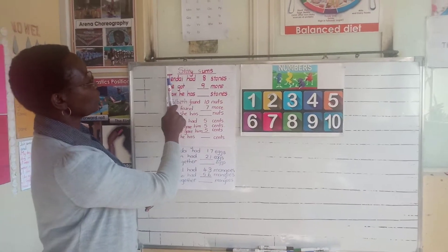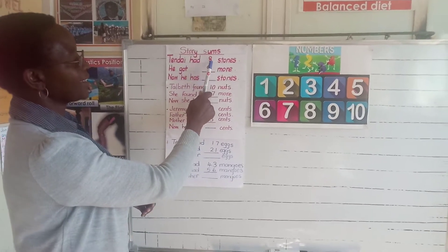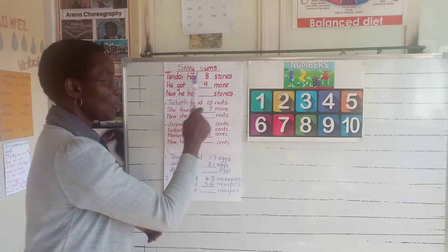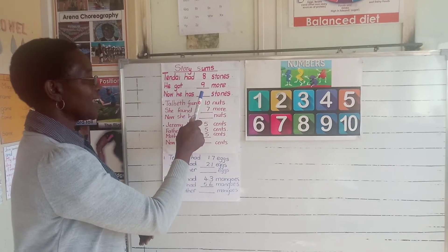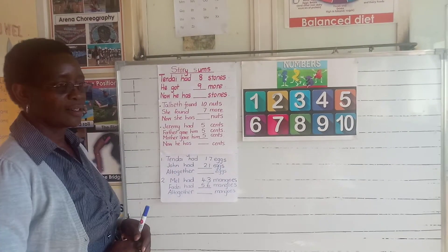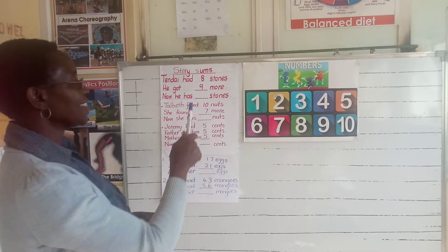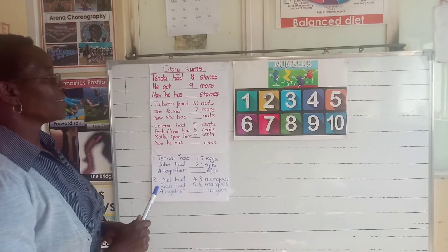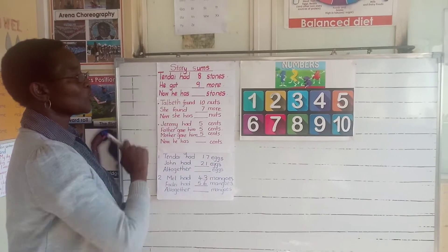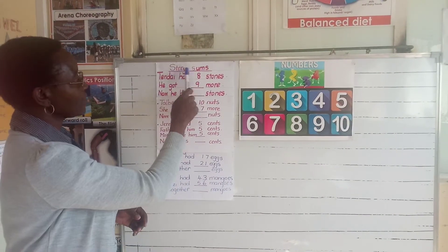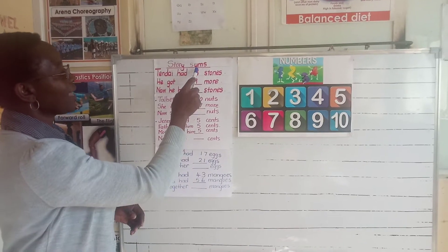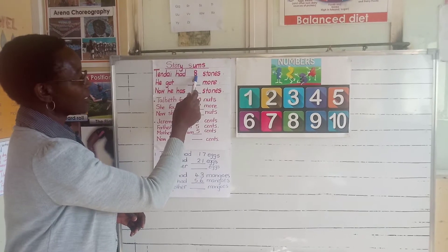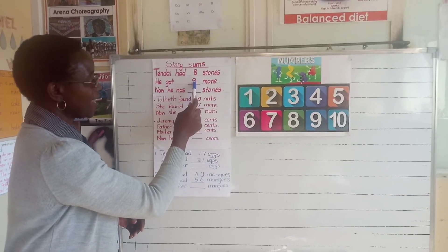There was a boy called Tenai. Tenai had eight stones and then he got nine more. Now he has how many stones? Remember we are adding numbers. So if we are adding these numbers, make sure that as you write them using the story sum method, the numbers are in a straight line.